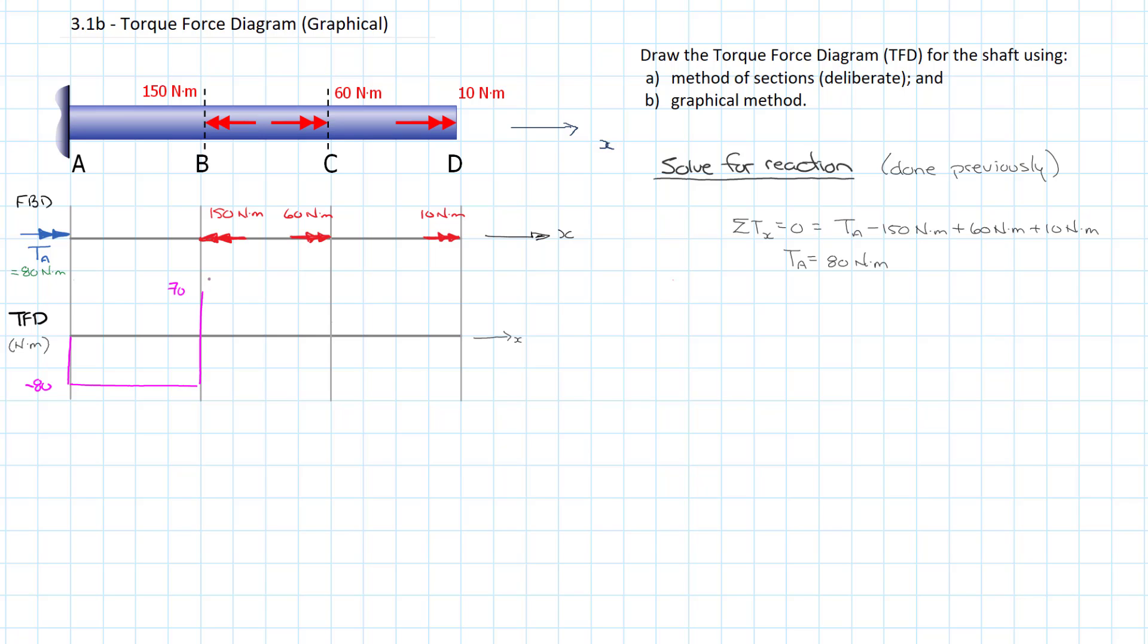Again, constant torque between B and C because there's no external torques applied. We get to the 60, it's going to the right, so it's going to pull us down or subtract from that. So 70 minus 60 brings us down to 10. We're constant across, and the final 10 brings us down to zero. It closes, we have equilibrium, and so we're happy. In just a matter of seconds we were able to generate the internal torque force diagram using this graphical method.